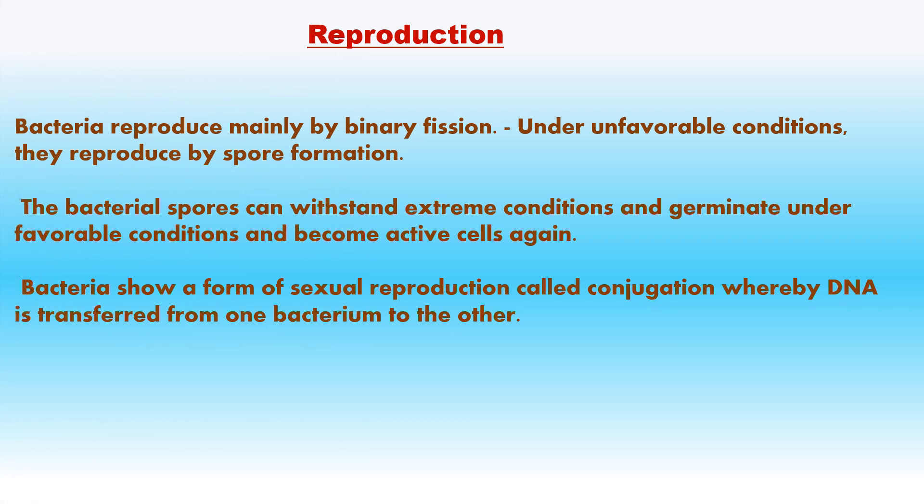Reproduction in bacteria: They reproduce mainly by binary fission. Under unfavorable conditions they reproduce by spore formation. The bacterial spores can withstand extreme conditions and germinate under favorable conditions to become active cells again. Bacteria also show a form of sexual reproduction called conjugation, whereby DNA is transferred from one bacterium to another.